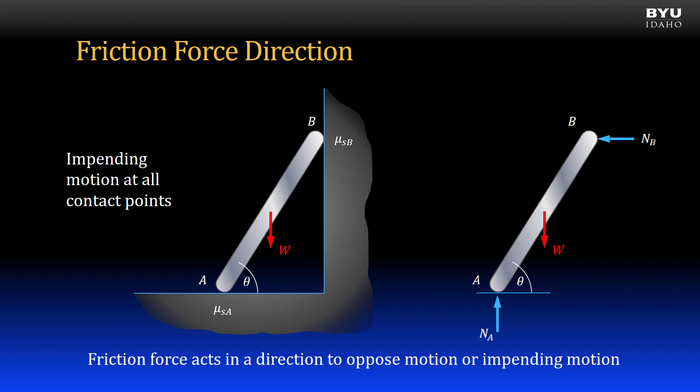The rule is that the friction force acts in a direction to oppose motion or impending motion. If this rod is going to slip under its own weight, point A contact will move to the left and point B contact will move downward. So I show the friction force at A pointing to the right and the friction force at B pointing upward.